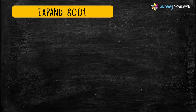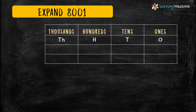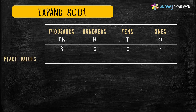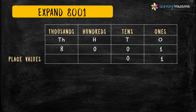Let's write the expanded form of one more 4-digit number. This time the number is 8001. Let's make the place value chart: digit 1 at 1's place, 0 at 10's place, 0 at 100's place, and 8 at 1000's place. Now we can write the place values. The place value of 1 is 1. The place value of 0 is 0, because as I told you earlier, the place value of 0 always remains 0 at all the places. So with the same logic, the place value for the next digit 0 is also 0.